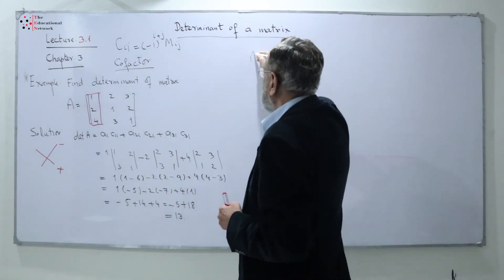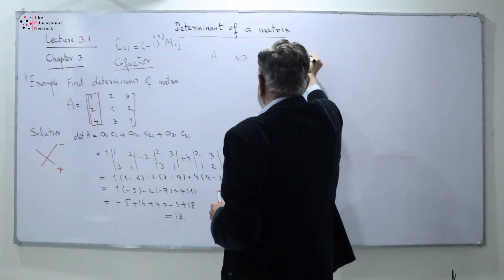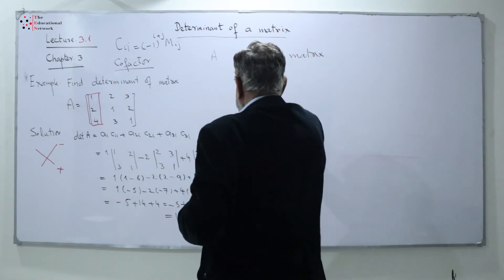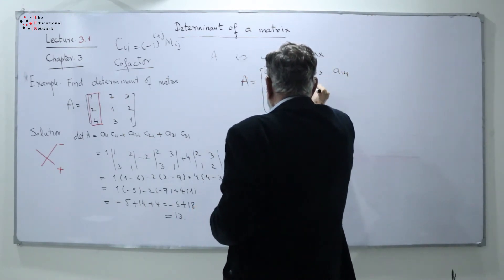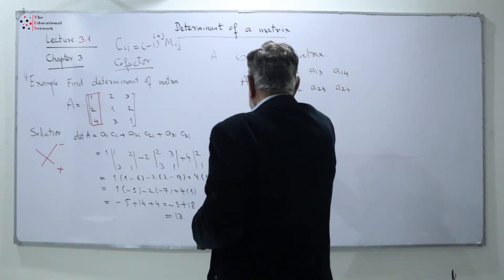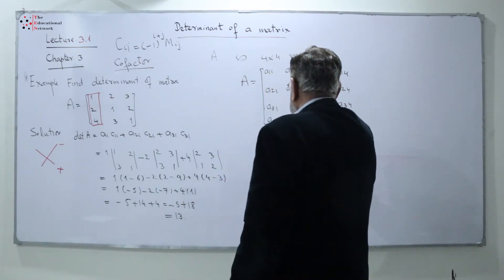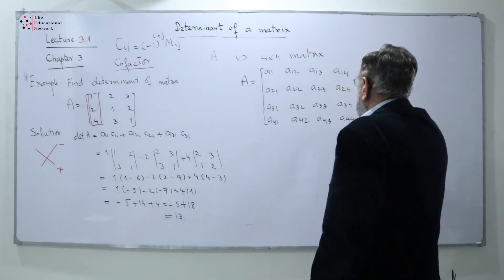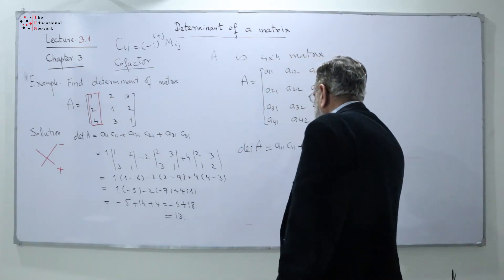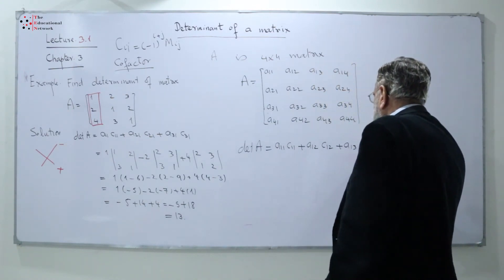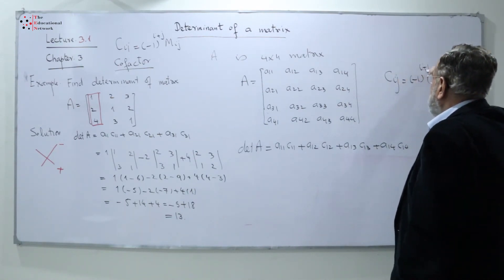We can apply this method to a 4x4 matrix as well. For matrix A of size 4x4, with entries A11 through A44, if we open from the first row, the determinant of A equals A11·C11 + A12·C12 + A13·C13 + A14·C14. Here Cij equals (−1)^(i+j) times the minor Mij.